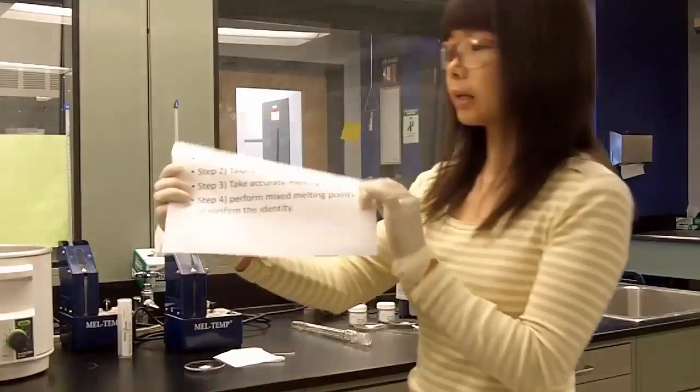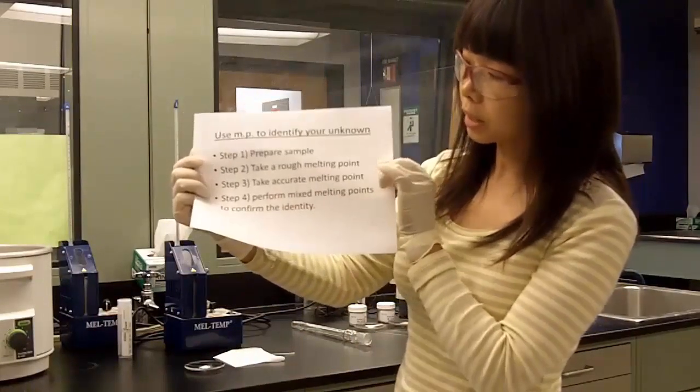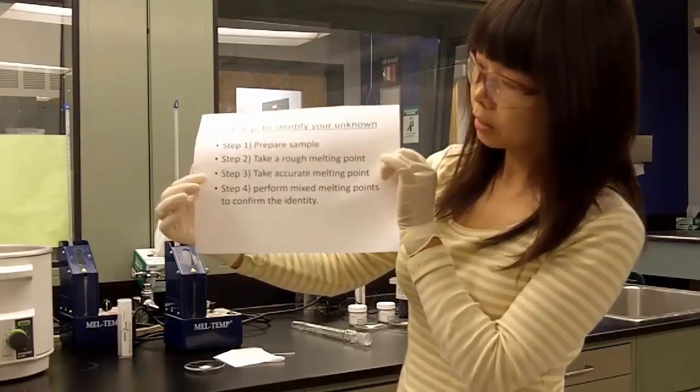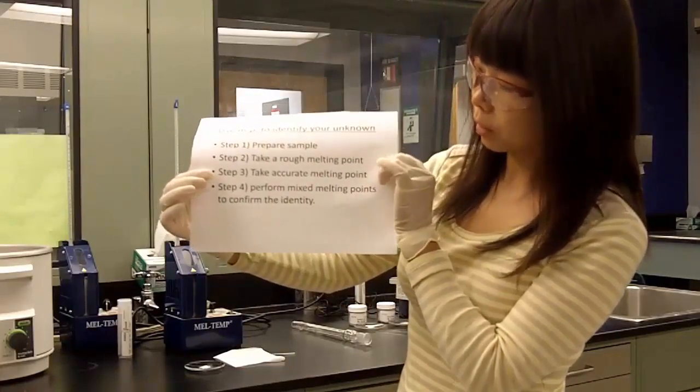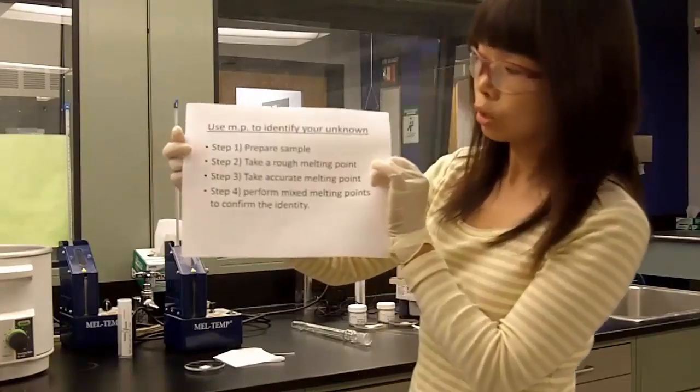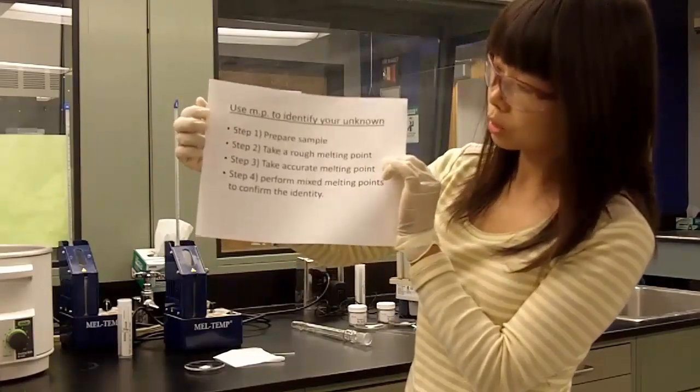So the steps to determine the identity of your compound: prepare the sample and take a rough melting point. We finished the second step already. And the next one, take accurate melting point. We already did this one. The accurate melting point is about 120 degrees to 123 degrees.